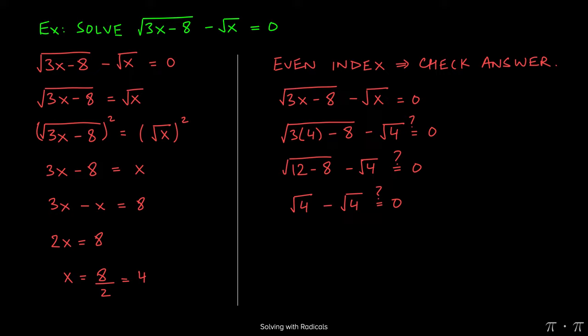Again, we have a question mark because we don't know that this statement is true. We're trying to determine the truth value of it. Well, square root of 4 minus square root of 4 is simply 0. Something subtracted from itself will always yield 0. And 0 does indeed equal 0, so this gives us a true statement.